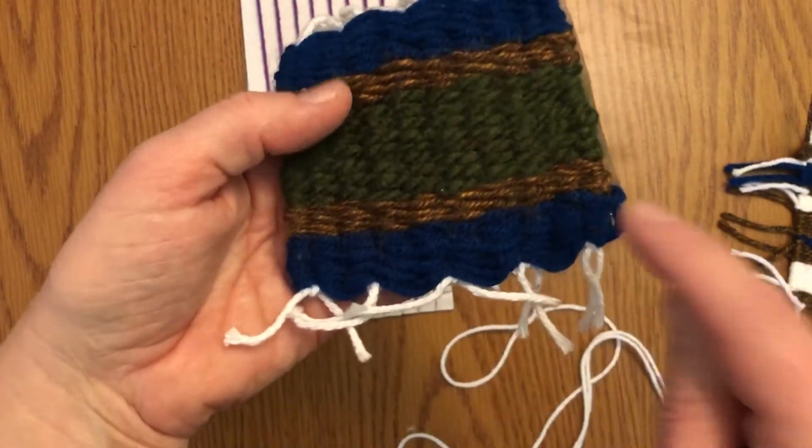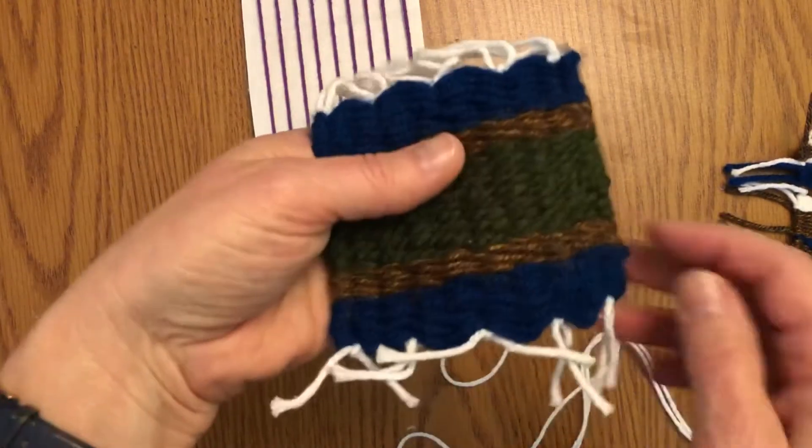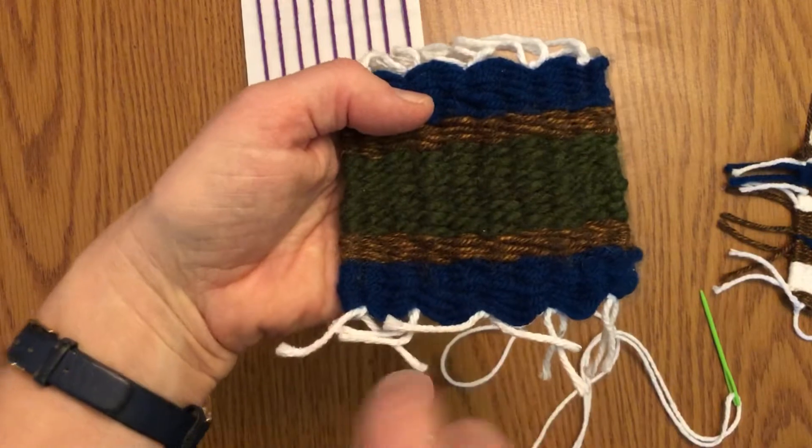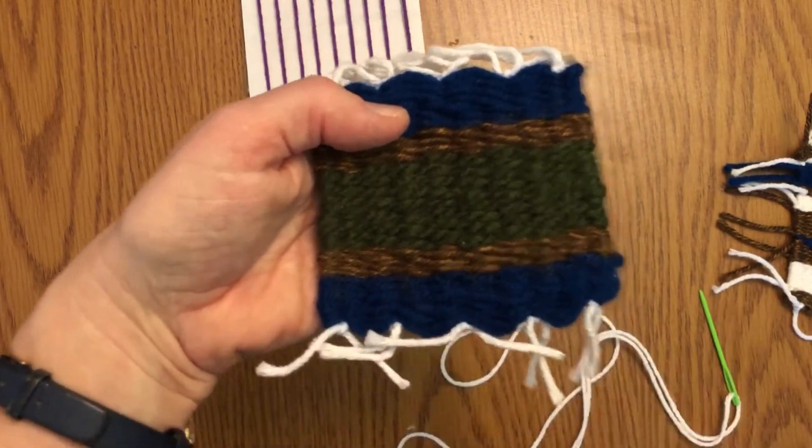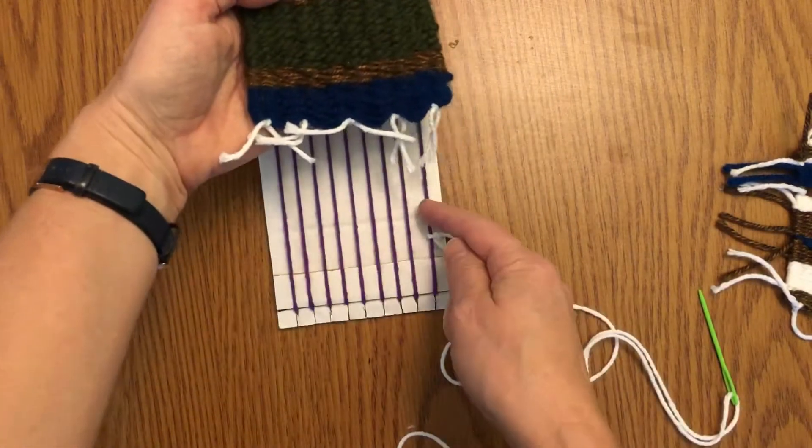Then coming back the other direction, if you went over under, over under going across, you would do under over, under over—the opposite pattern coming back. You want to make sure you go all the way and wrap around the last warp string every time.